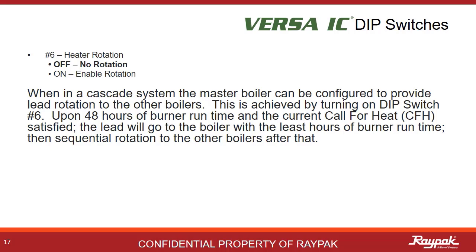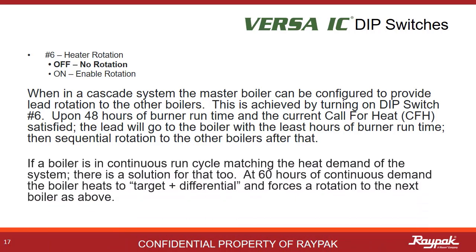Dipswitch number six controls heater rotation — this is some cool RAPAC technology. When in cascade, turn on Dipswitch number six on the master boiler. After 48 hours of burner run time and the current call for heat is satisfied, the next boiler in the cascade with the least amount of burner run hours will fire on the next call for heat. If a boiler is running in perfect harmony with the building, modulating up and down as needed but never actually shutting off, there is a solution: at 60 hours of continuous burner run time, the boiler will go to target plus differential, putting a small extra shot of heat into the system, and then shut off. At that point, the next boiler in the cascade will fire up.